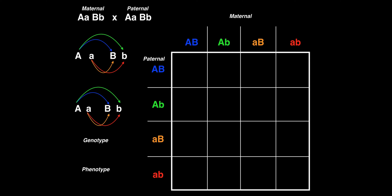Our first step in writing out our dihybrid cross is to figure out what goes in each of the columns and each of the rows. For this example, I'm using the maternal on top and paternal down here. You can do it any way you want — paternal can be on top. It doesn't matter as long as you're consistent.